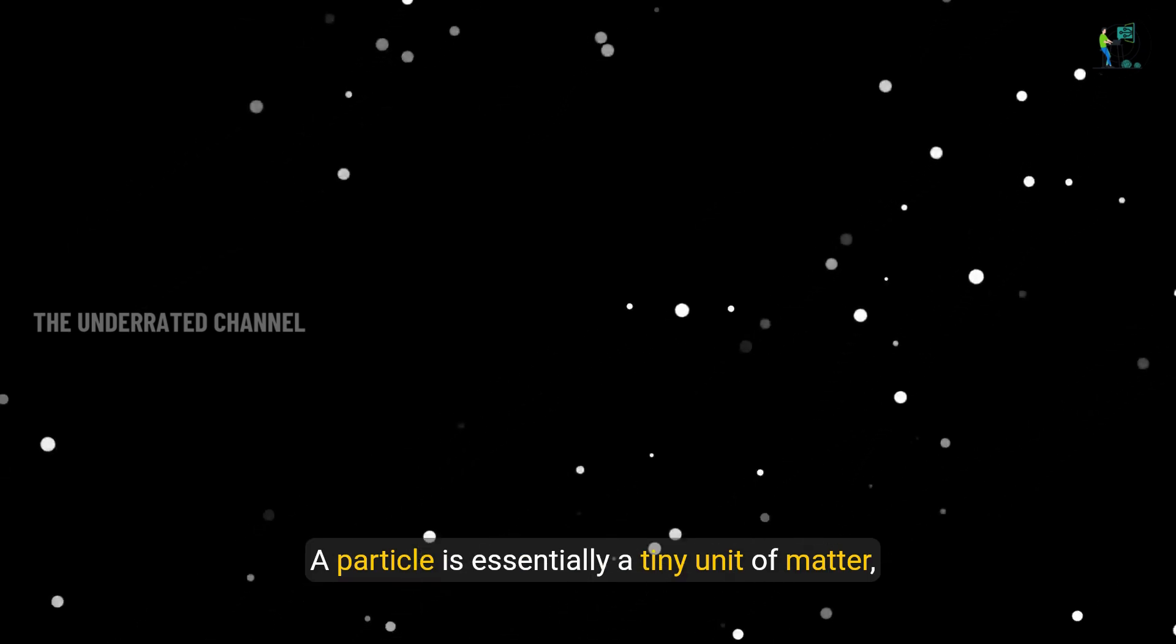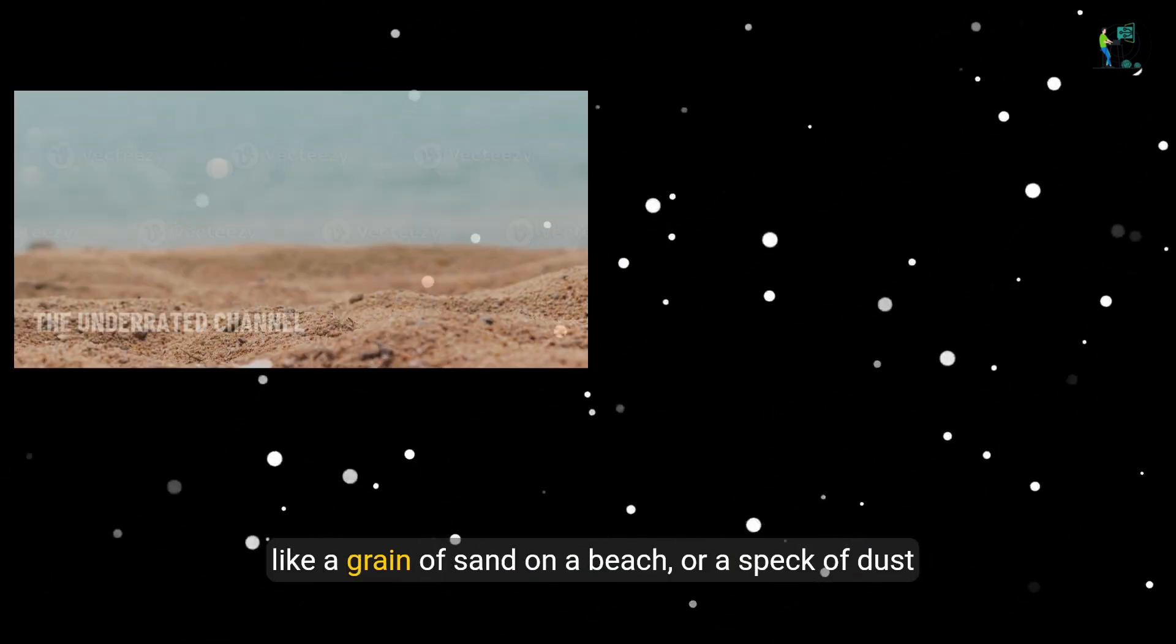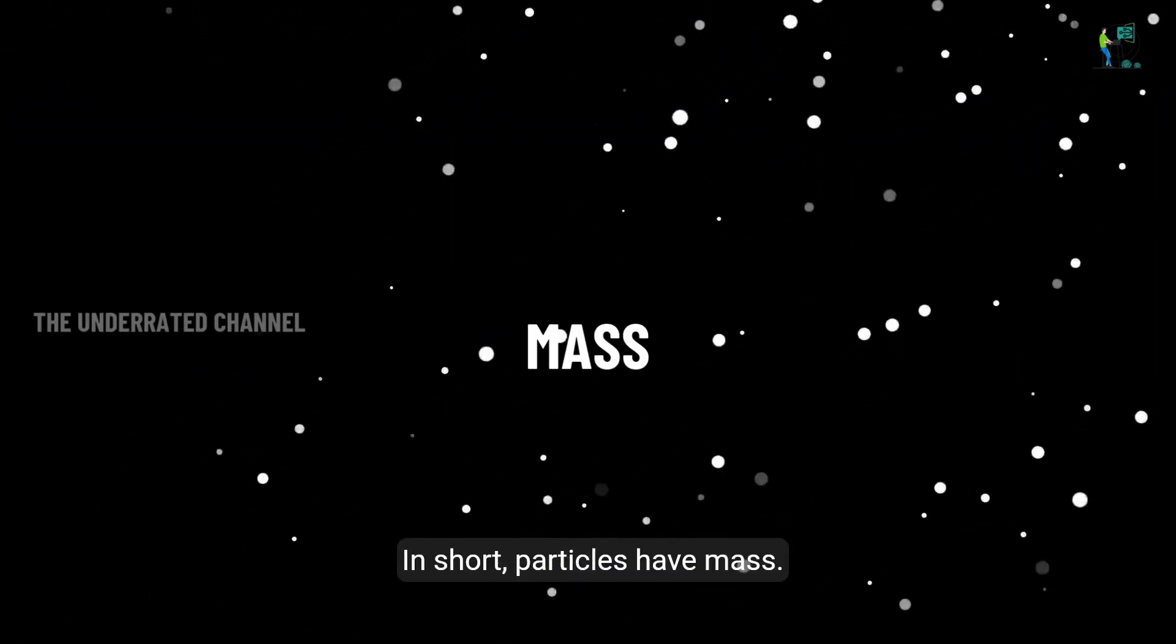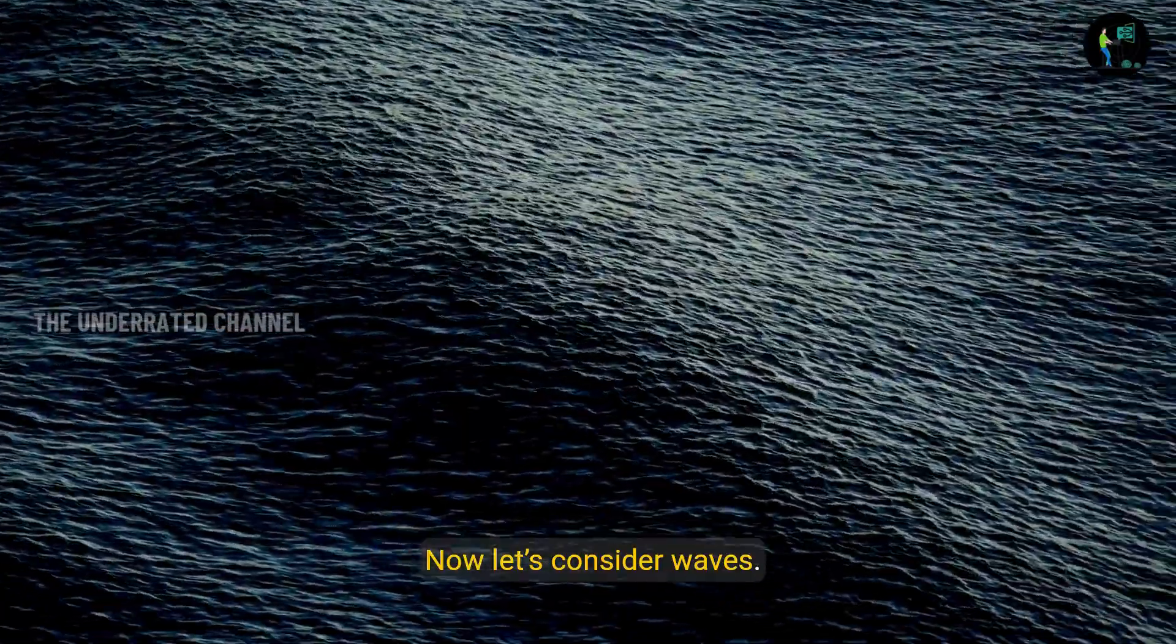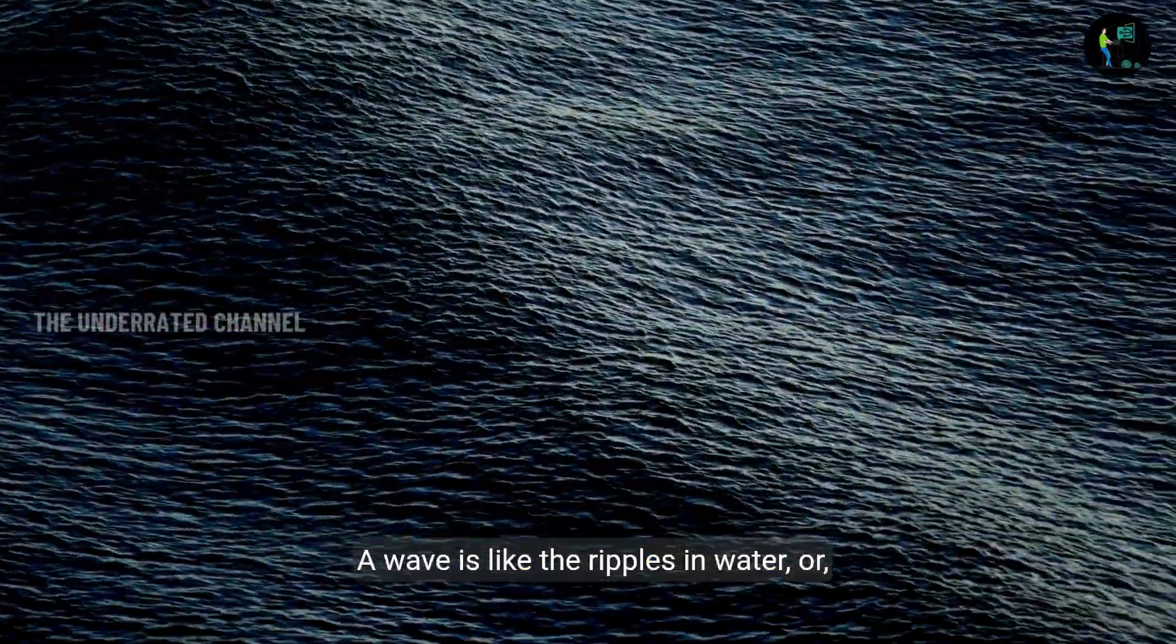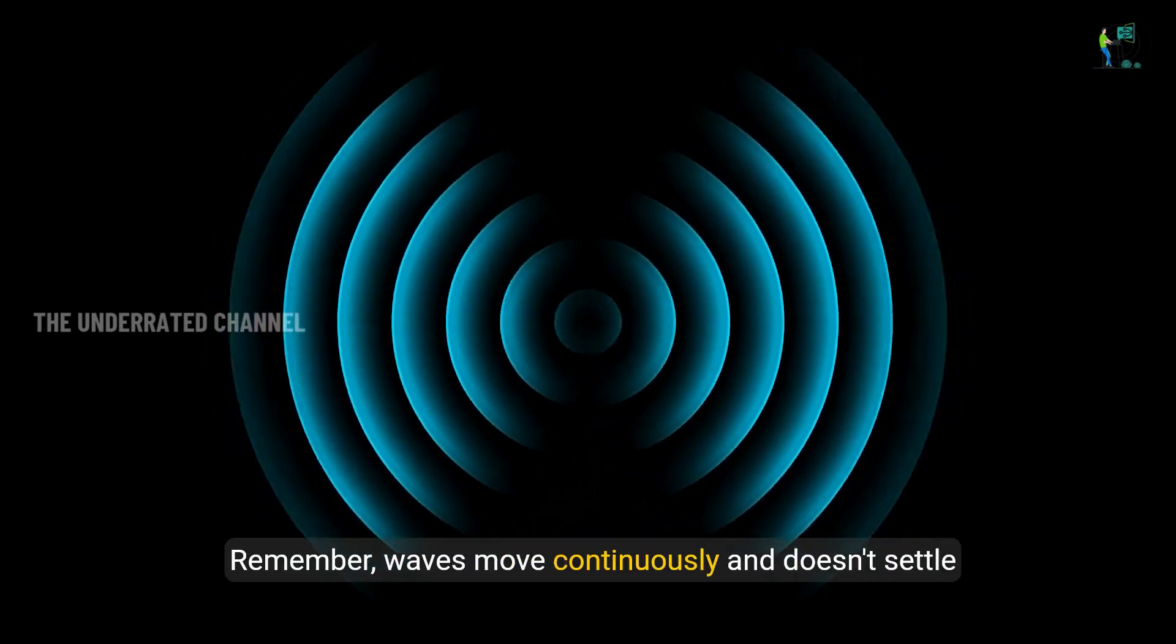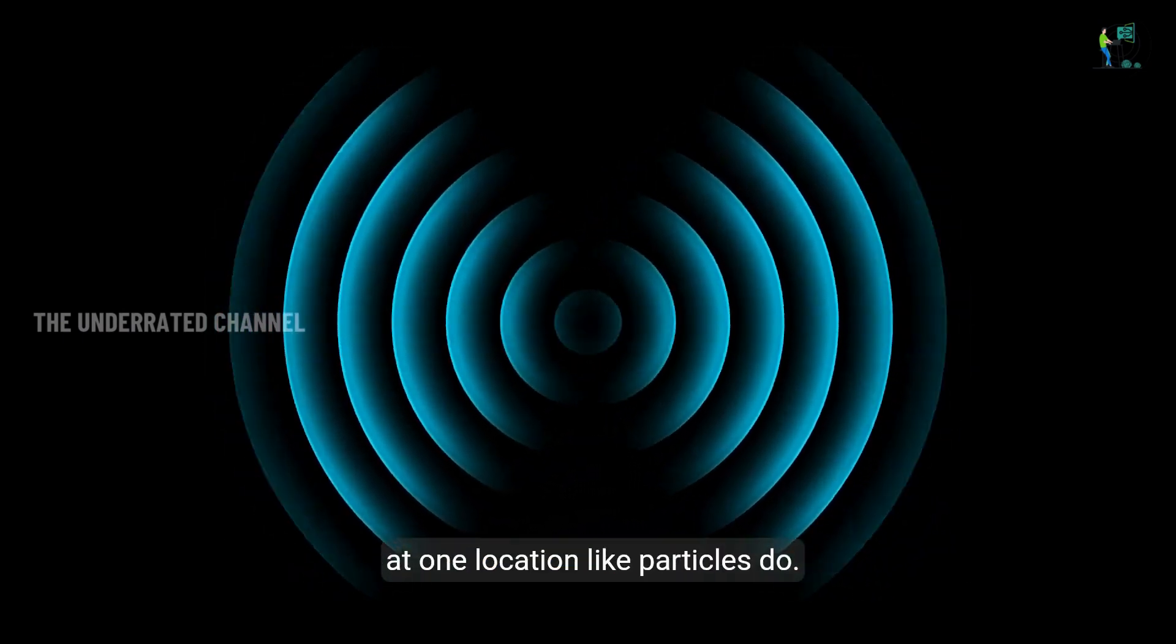A particle is essentially a tiny unit of matter like a grain of sand on a beach or a speck of dust in the air or whatever small thing you consider. It's a particle. In short, particles have mass. Now let's consider waves. A wave is like ripples in water or the radio waves we receive. Remember waves move continuously and doesn't saturate one location like particles do.